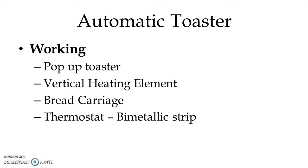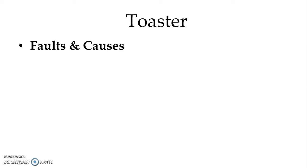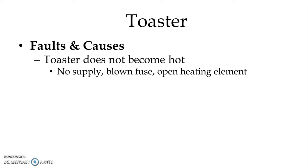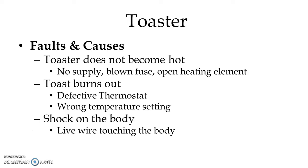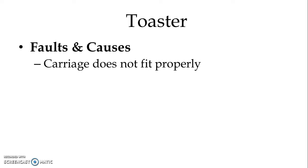Now let us look at different probable faults in the toaster and their possible causes. Fault: toaster does not become hot — possible causes: there might be no supply, or the fuse might have blown, or the heating element might have opened. Fault: toaster burns out — cause: defective thermostat or wrong temperature setting. Fault: shock on the body — cause: there must be some live wire touching the body, or improper earthing. Fault: carriage does not fit properly.